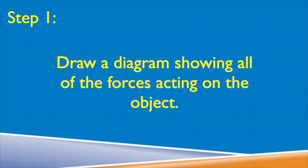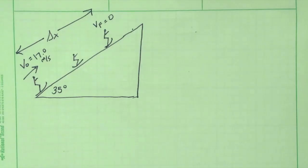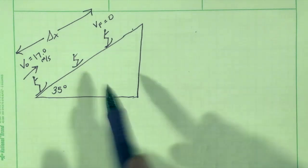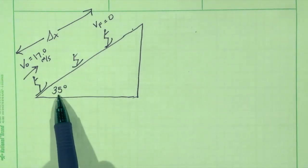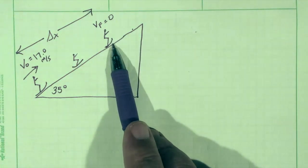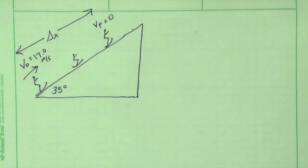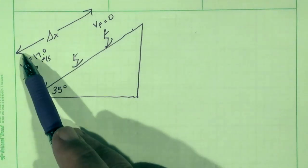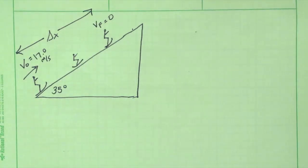The first part of our problem-solving process is always to draw a diagram showing the information we're given and the forces acting on the object — in this case, the snowboarder. So now we have our snowboarder going up a hill with an angle of 35 degrees to the horizontal, with an initial speed of 17.0 meters per second, and she stops somewhere on the hill with a final velocity of zero. She has traveled a distance, delta x, up the hill, and we want to find that delta x.